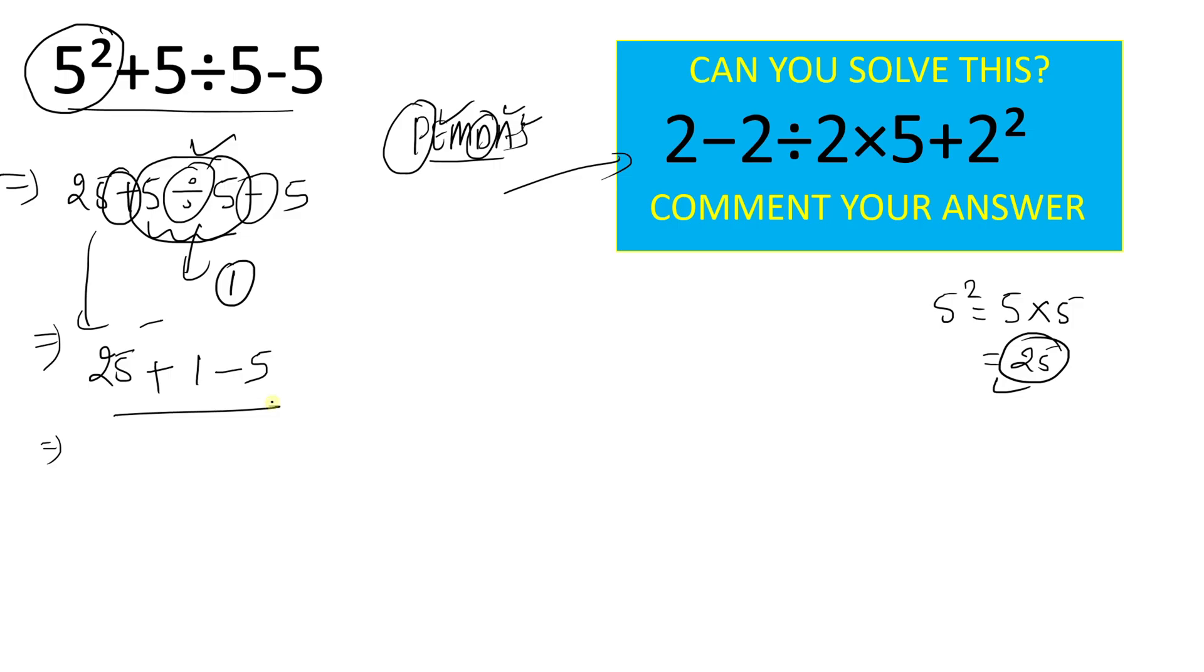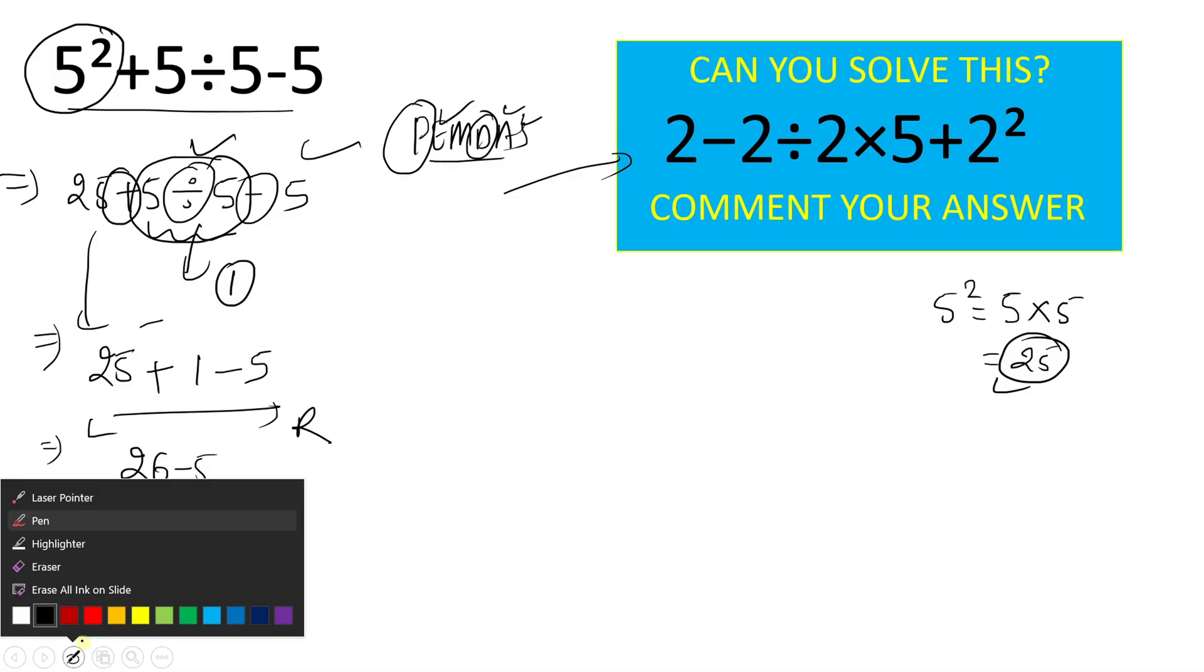25 plus 1 minus 5. Now we will do left to right operations here. 25 plus 1 will give result 26 minus 5. And 26 minus 5 will give here 21, which is the right answer for the first question. And moving to the next question.